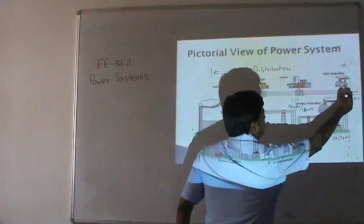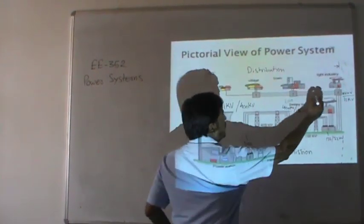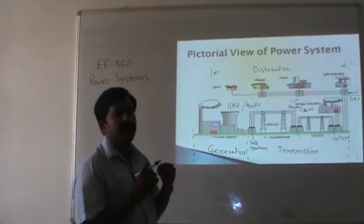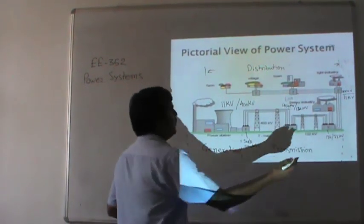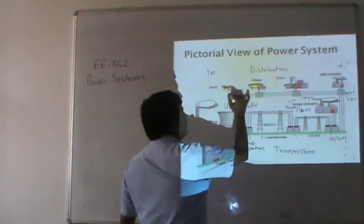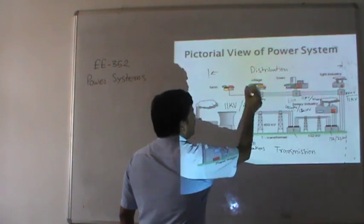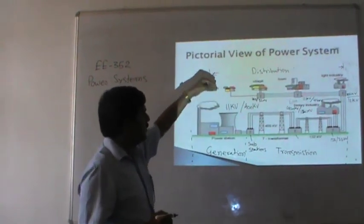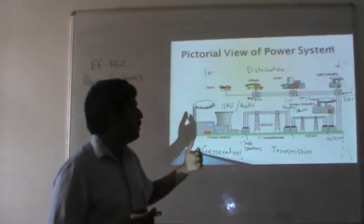By this way, the power is transmitted from the generating station to the load center. Heavy industries are bulk consumers of electrical energy — for example, cement industries and steel mills. Light industries, such as oil mills, have less power consumption compared to heavy industries. Towns, villages and farms form the residential section where energy is distributed.